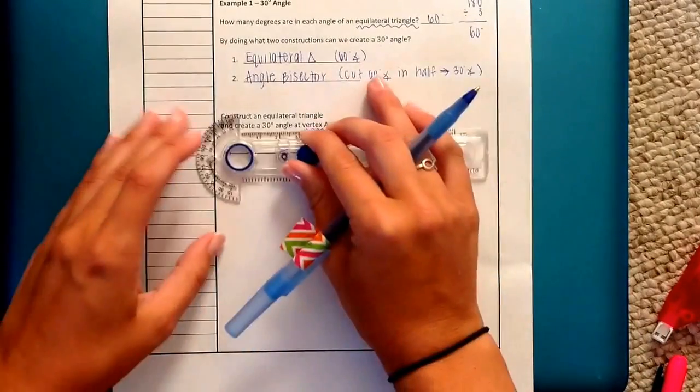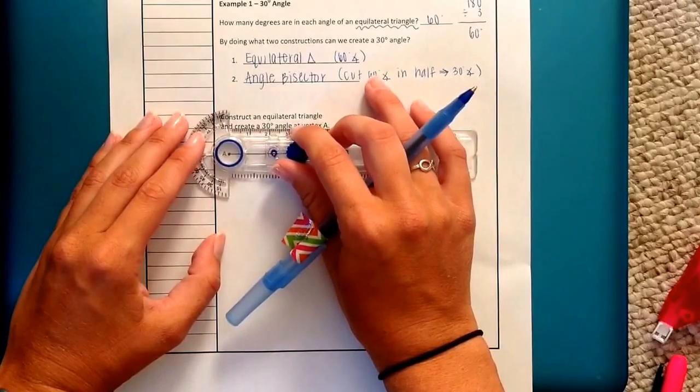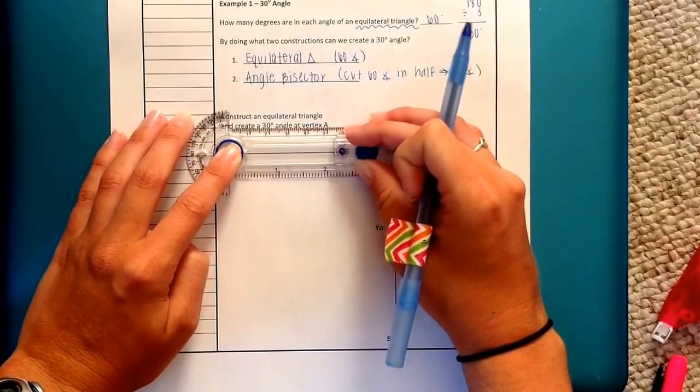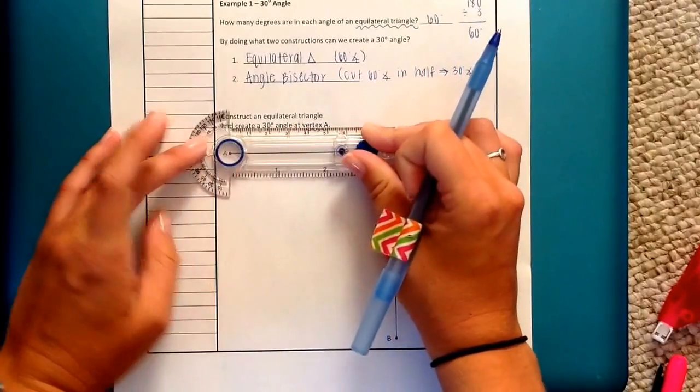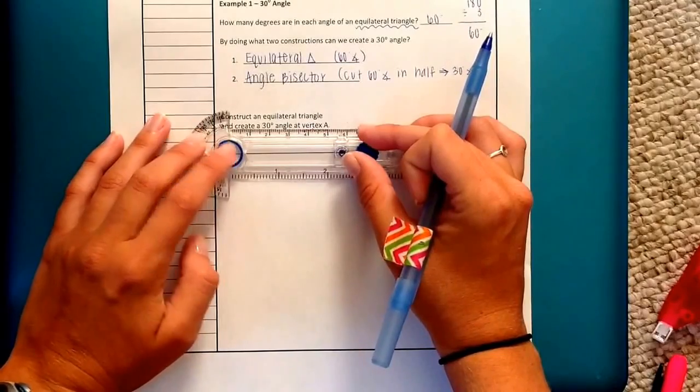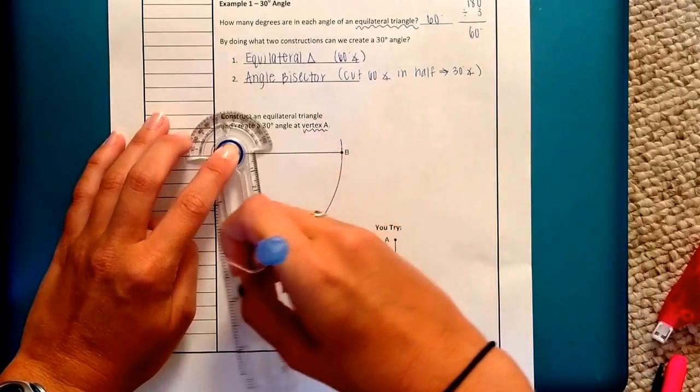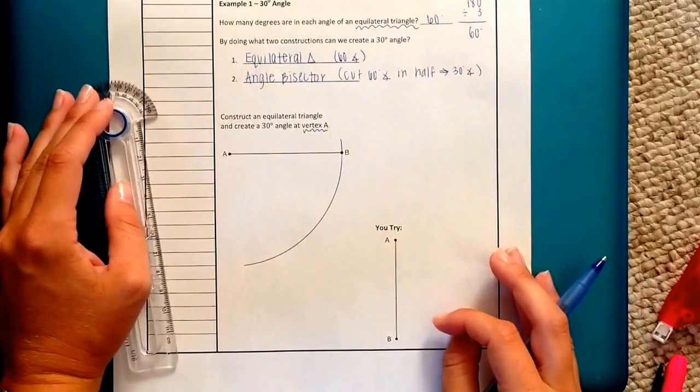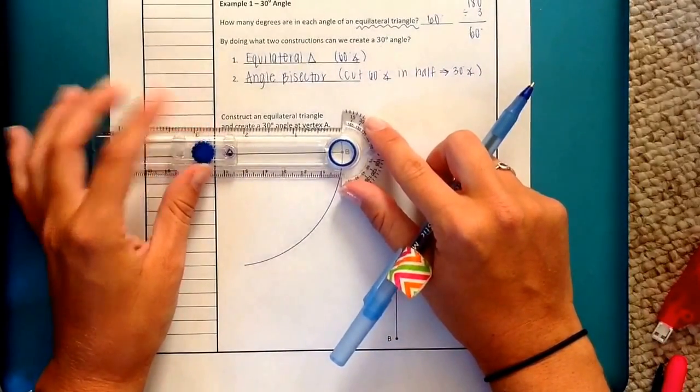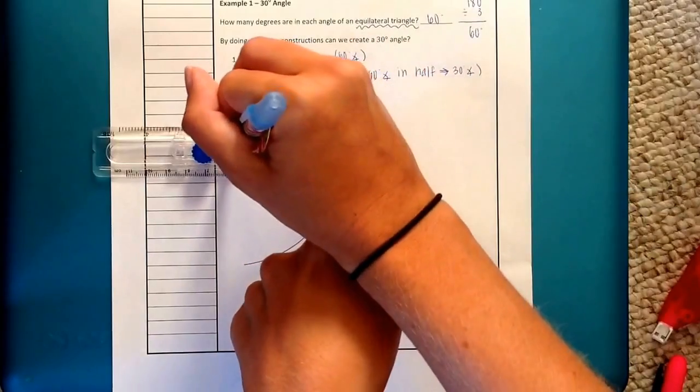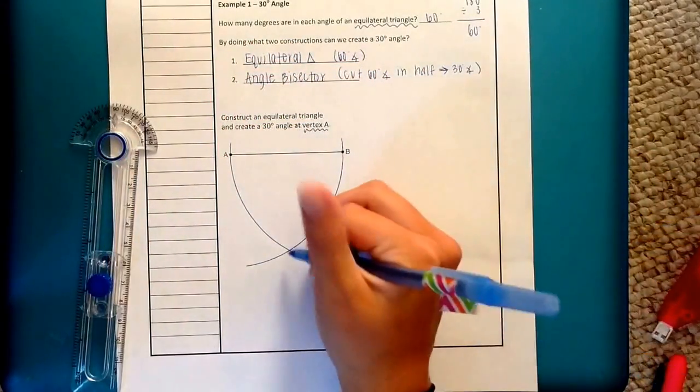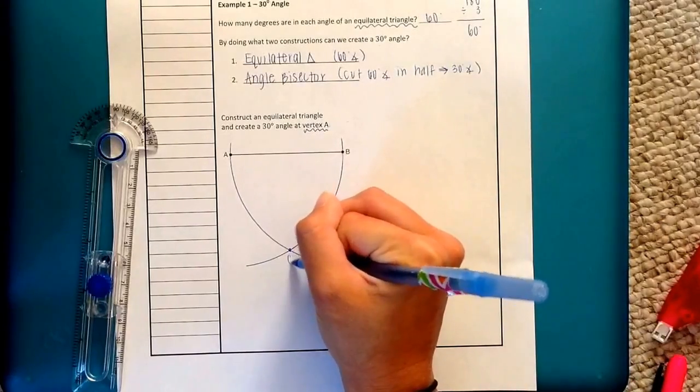So starting with the equilateral triangle this is your basic equilateral triangle where we start with the center on A, radius opened up to B. You guys should be pretty comfortable with this. It's one of the easiest constructions ever. Center on A, radius on B. Swing it slightly above and way down below. Then we're going to switch. Remember because it's equilateral we don't want to change the radius. Keeping the radius the same gives us equal lengths. Where they intersect let's just call that point C.